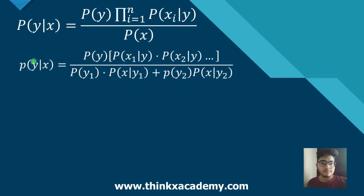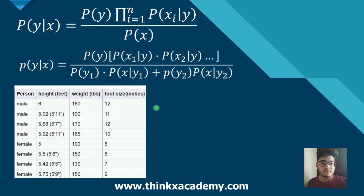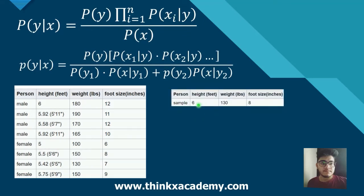So this is the formula that we are going to use to do the sex classification. Let's take a look at the training set that we have. In this table, we have person, male or female. We have four males and four females, with features like height, weight, and foot size. We will use this training dataset to train our model. Then we are given a sample: the height of this person is 60, weight is 130 pounds, and the foot size is eight inches. We will use the Naive Bayes classifier to find out whether the given sample belongs to a male or a female.